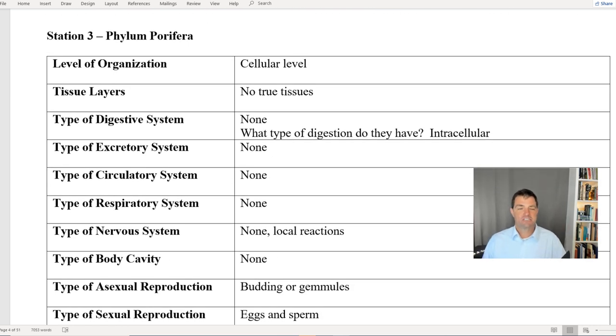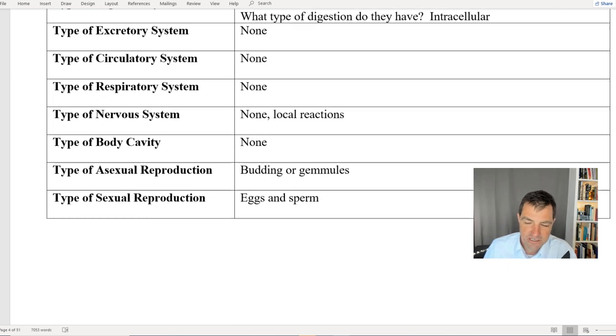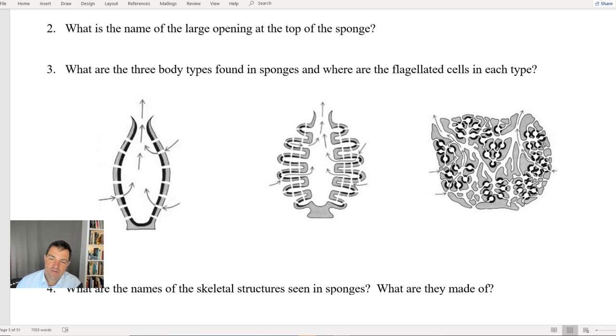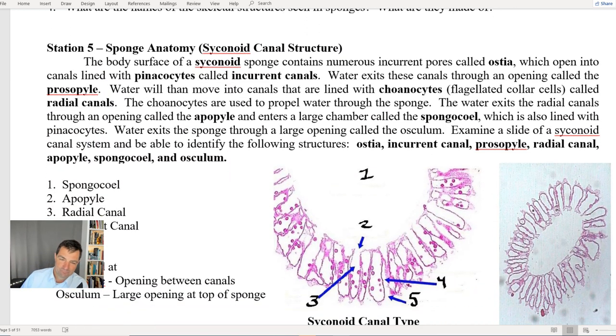For a chart like this, where we have all the information on there that you need to know also, the information is already provided to you on it. So you need to know that as well. And this part here, I've already mentioned this in lecture, but remember that these are not classifications here. These are body types. So these are different body types based on how the water flows through these sponges. They are not themselves classification.